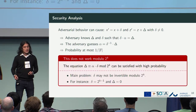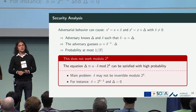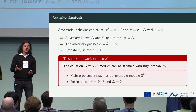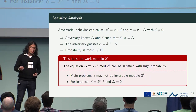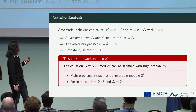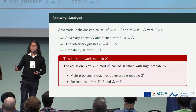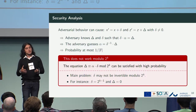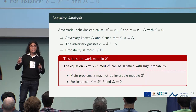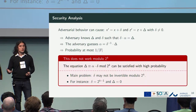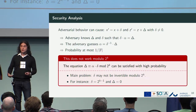Notice that this doesn't translate directly to the setting of integers modulo 2^k, simply because we cannot take the inverse of δ — δ may not be invertible. We cannot argue this equation is satisfied with low probability, because it can be satisfied with high probability. For example, if small δ is 2^{k−1}, then the probability that something times 2^{k−1} gives Δ=0 requires only that alpha is even — that's a one-half probability — so the adversary can cheat with high probability.